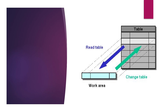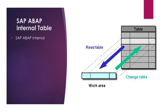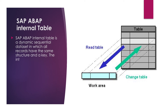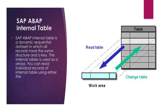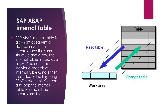Now we are going with the SAP ABAP internal table. An SAP ABAP internal table is a dynamic sequential data set in which all records have the same structure and a key. The internal table is used like arrays. You can read individual records using either the index or the key with the read statement. You can also loop the internal table to read all records one by one. The read operation reads a single record; the loop operation reads multiple records.